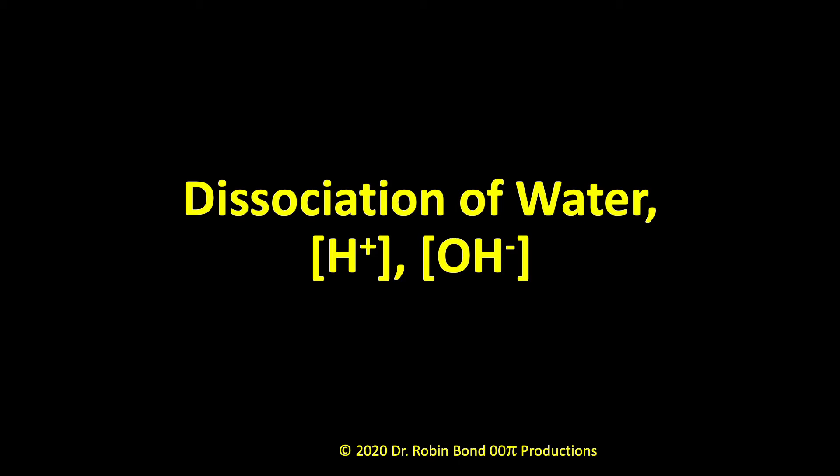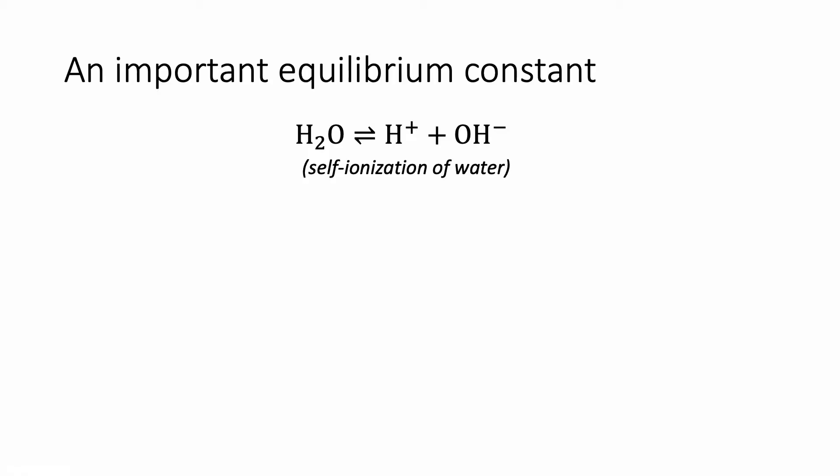Today we're going to talk about the dissociation of water and how that can help us understand hydrogen ion concentrations and hydroxide ion concentrations. We talked before about the self-ionization of water, in which water can break apart into H+ and OH-. The equilibrium constant for this is given by the H+ concentration times the OH- concentration, with no contribution from water since it's a pure liquid. That special equilibrium constant is called Kw — W for water.